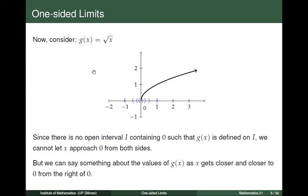Now let us consider another function. This time, let us consider g(x) equal to the square root of x. The graph of the function g is given by this figure. Note that the domain of g is the set of non-negative real numbers — that means the positive real numbers and 0. So if we consider the number 0, then any open interval I containing the origin will have to include points that are outside the domain of g.